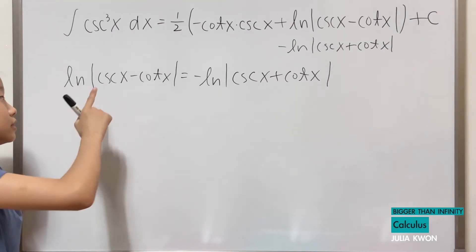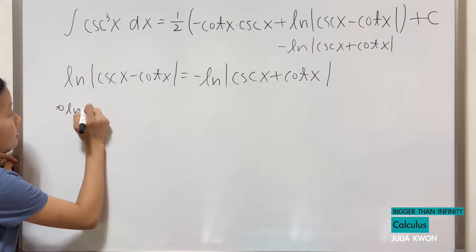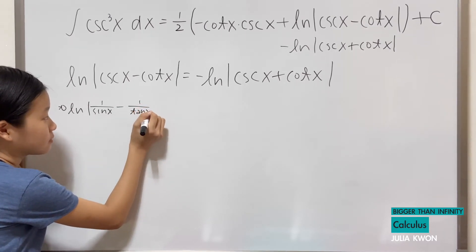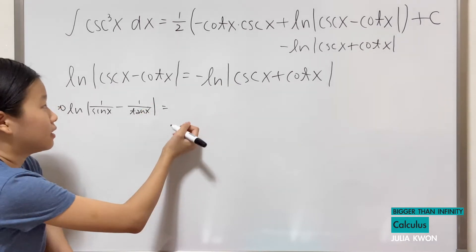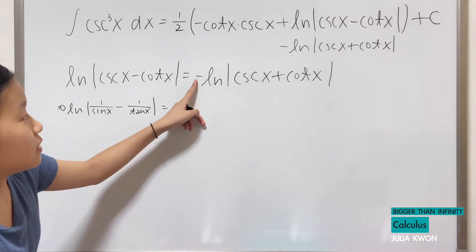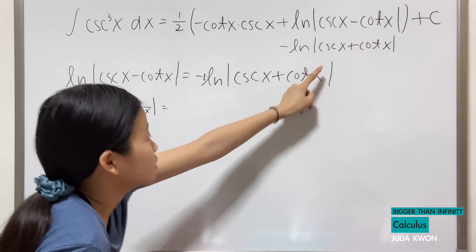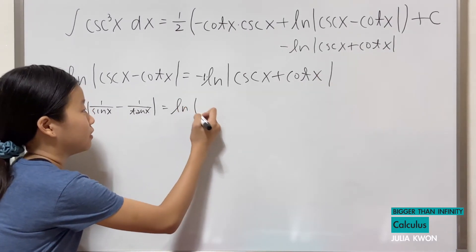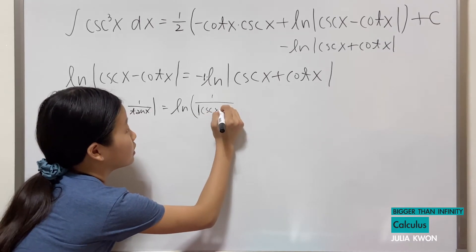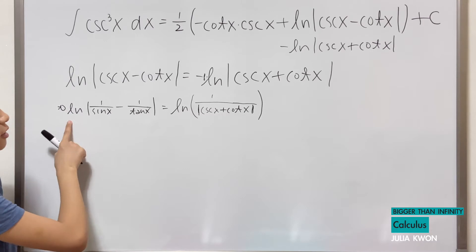First of all, we are going to change cosecant to 1 over sine x, and cotangent to 1 over tangent x. So we have ln of the absolute value of 1 over sine x minus 1 over tangent x. Since we have the negative on the right side, we're going to use the law of logarithms and bring the negative one up as an exponent, giving us ln of 1 over the absolute value of cosecant x plus cotangent x.